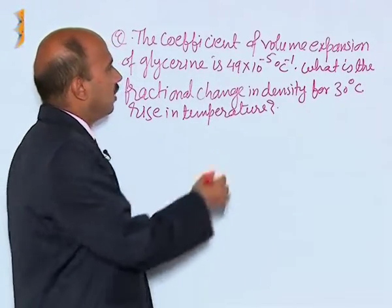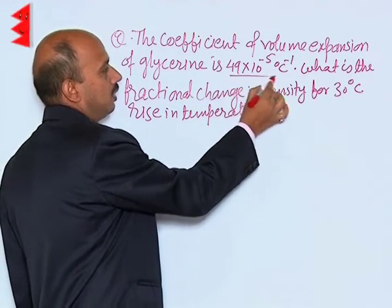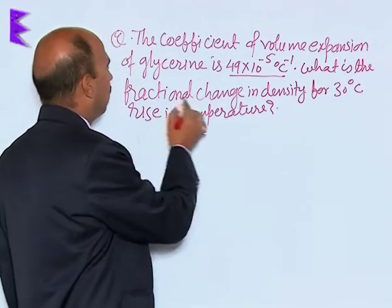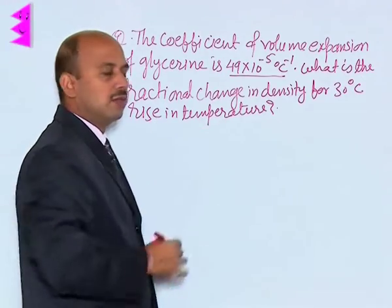Now see in this example, the coefficient of volume expansion of glycerin is 49 into 10 raised to power minus 5 per degree Celsius. What is the fractional change in density for 30 degree Celsius rise in temperature?